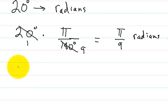Now let's try a different one. How about 10 degrees? If you want to convert 10 degrees into radians, again you just multiply it by pi over 180 degrees, pi radians divided by 180 degrees.